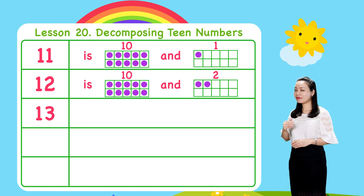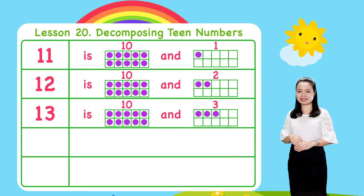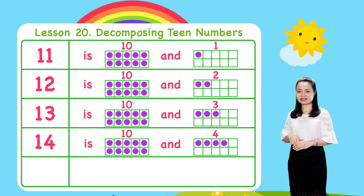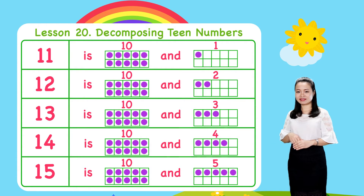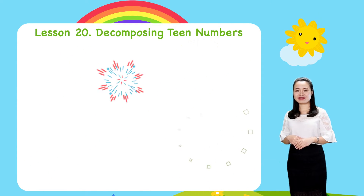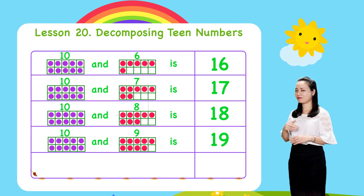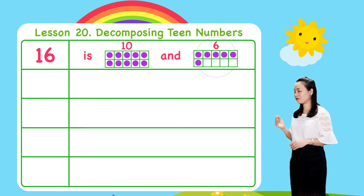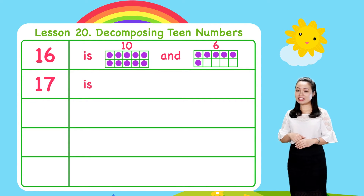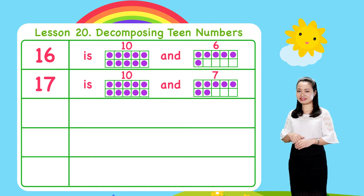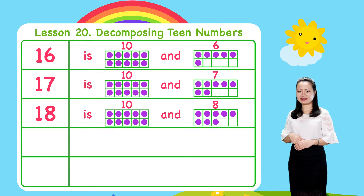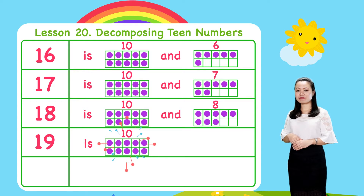13 is 10 and 3. 14 is 10 and 4. 15 is 10 and 5. 16 is 10 and 6. 17 is 10 and 7. 18 is 10 and 8. 19 is 10 and 9.